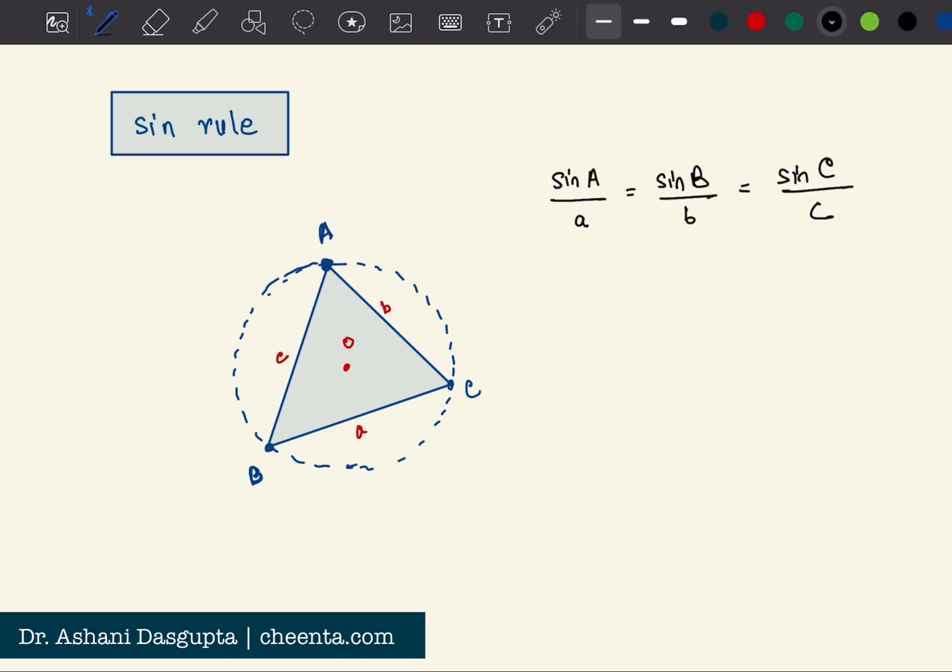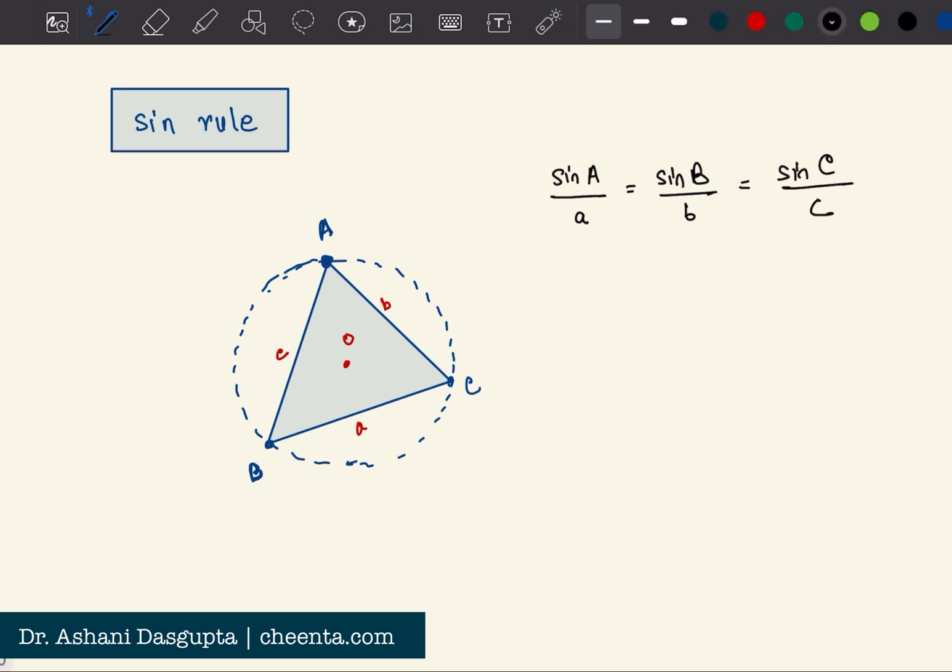So I'll quickly show you why that is true. You need a construction - take the center point O of this triangle, join BO and extend it to meet the circumference at the point A prime and join A prime C. So first of all this angle A prime is equal to angle A because they are subtended by the same arc.